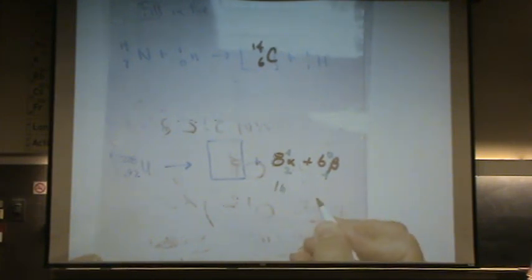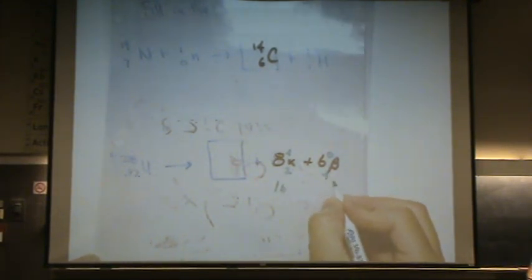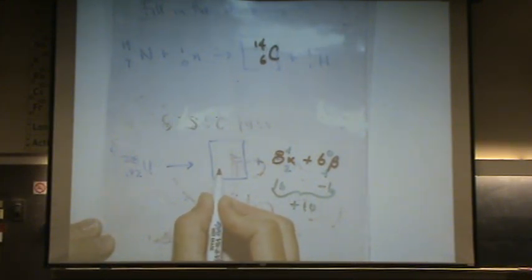Wow, what's this going to add up to? So 8 times 2, that's 16. And 6 times minus 1, that's minus 6. So a total of minus 10, or plus 10. Plus 10 here. So this has to be 82. If you look on your periodic table, 82 turns out to be lead.